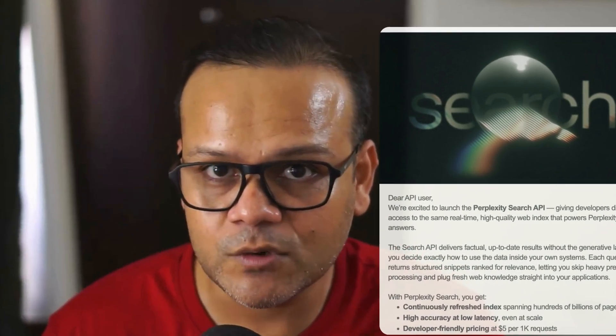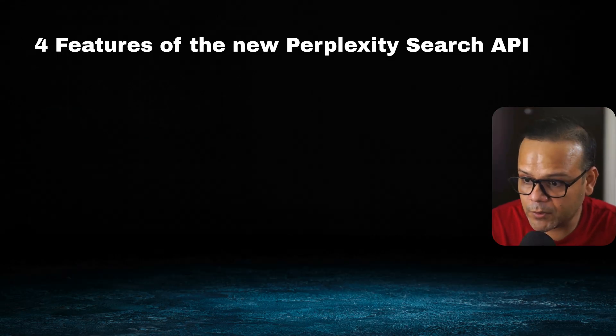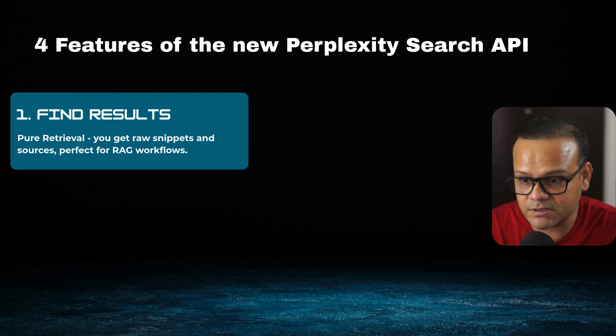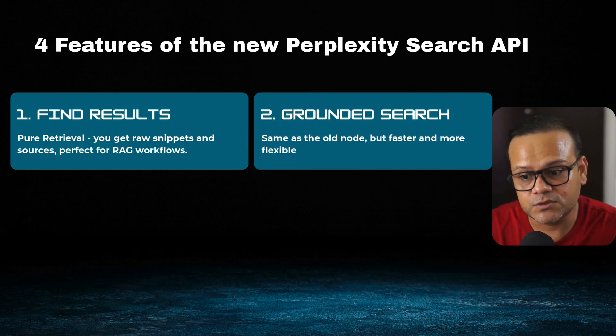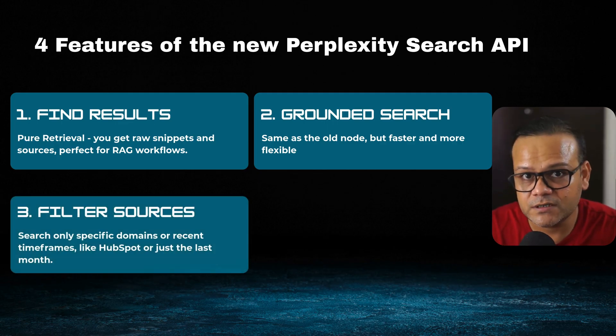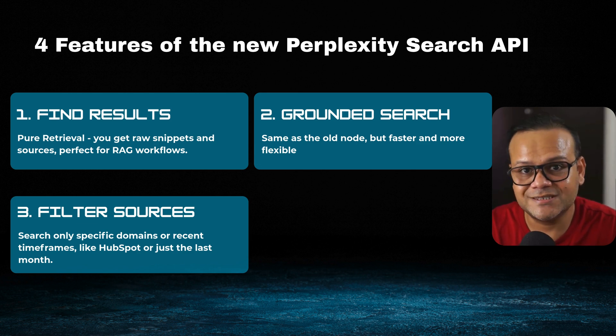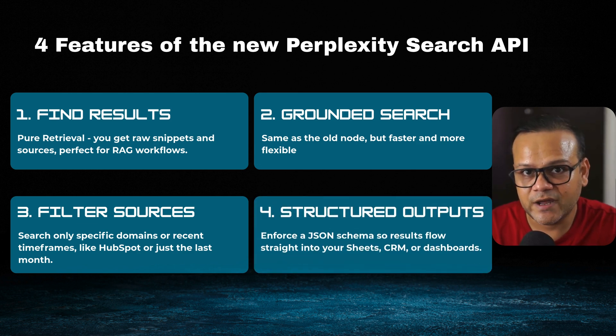Perplexity just launched a new search API and with this update they've moved away from just answers, giving you more control. There are four things it can do: first is pure retrieval, where you get raw snippets and sources good for RAG or research workflows. Second is grounded chat with quick summaries and sources. Third is filtered sources by specific URLs and time frames.